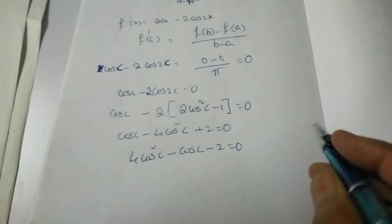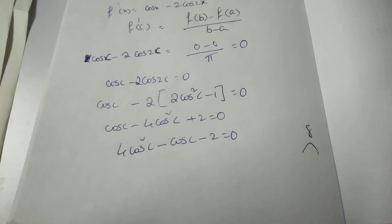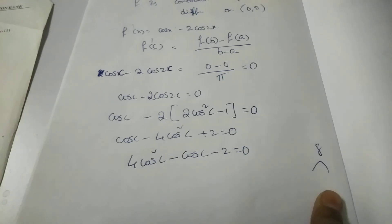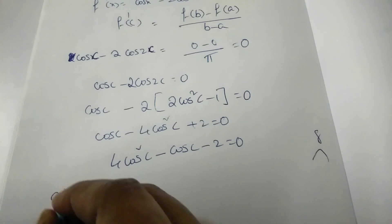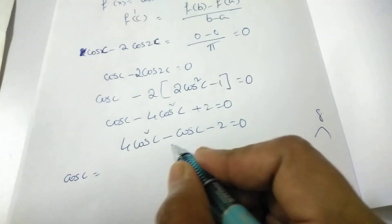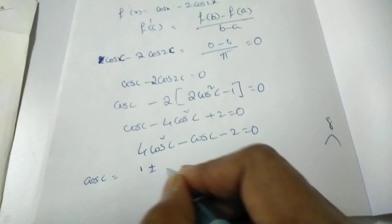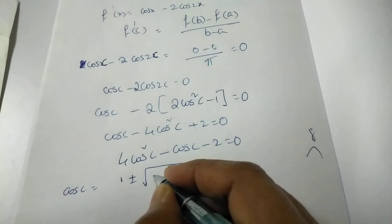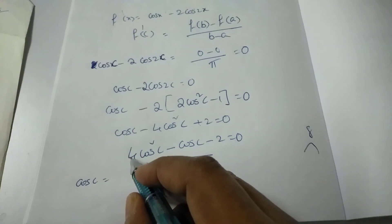The discriminant involves 4 times 8 giving values like 32. Since no simple integer solution exists, we apply the quadratic formula: cos c = [−b ± √(b² − 4ac)] / (2a). This gives cos c = [1 ± √33] / 8.